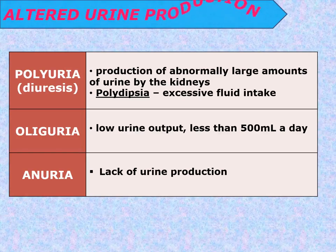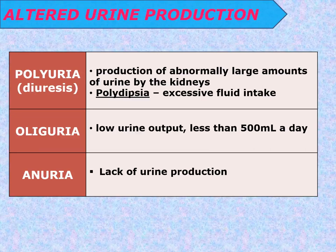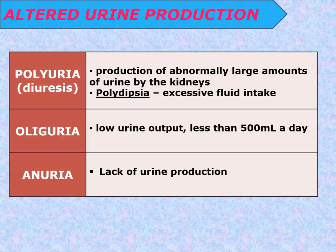Alterations in urine production: Polyuria or diuresis is the production of abnormally large amounts of urine by the kidneys, related to polydipsia — excessive fluid intake. Oliguria is low urine output, less than 500 ml a day. Anuria is the lack of urine production. Remember: poly means many, oli means low, and an means lacks — you will encounter these prefixes frequently.